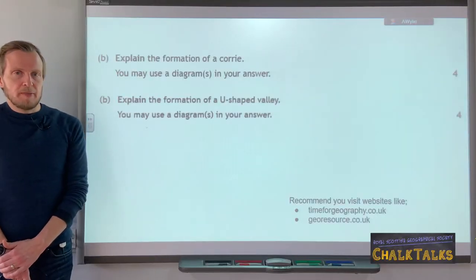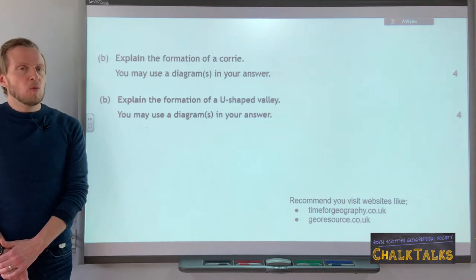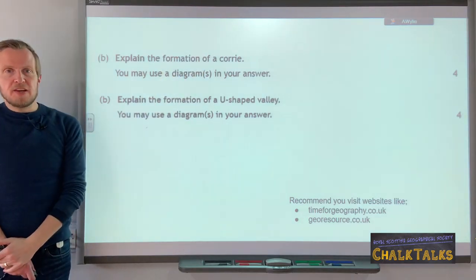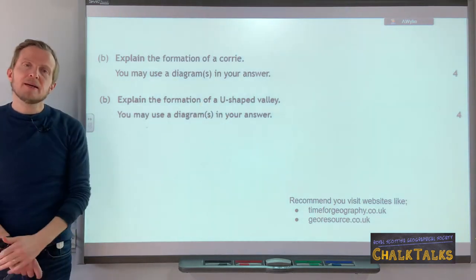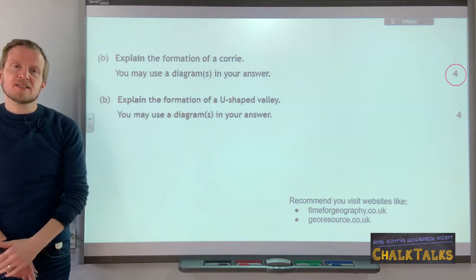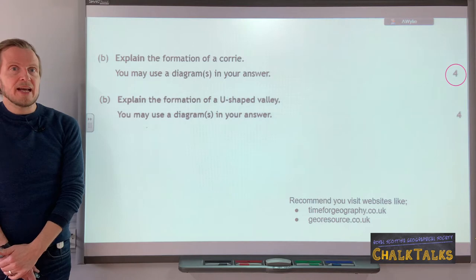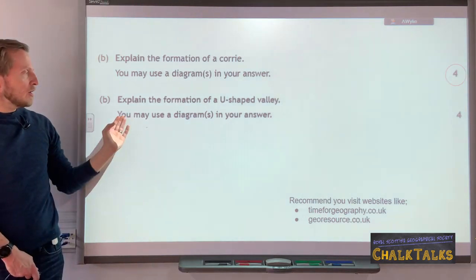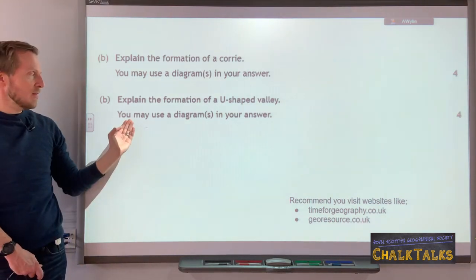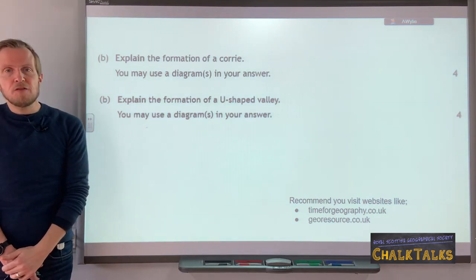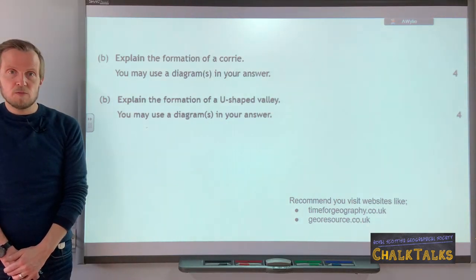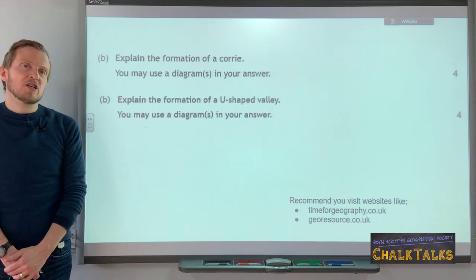The physical environments topic as it relates to glacial uplands will always contain one exam question that asks you to explain the formation of one of the features — this could be the Corrie, the U-shaped valley, the Pyramid Peak, or the Arete. These questions will always be worth four marks, so you are looking for four points that explain the landscape feature. The question will also say 'you may use diagram or diagrams in your answer' — it says you may, not you must. This gives you the freedom to either write your answer or draw a diagram with clear annotations, which could be one diagram or a sequence of diagrams.